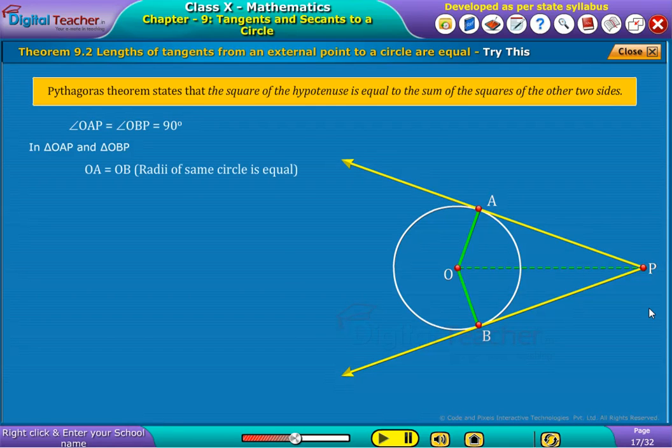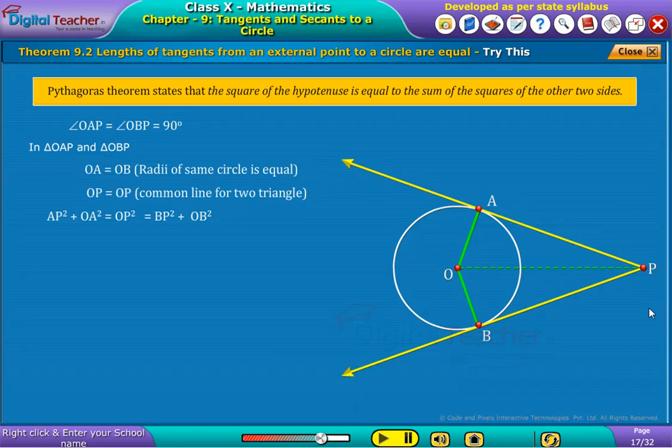OA is equal to OB, OP is equal to OP, common line for two triangles. Therefore, we write as AP squared plus OA squared is equal to OP squared is equal to BP squared plus OB squared.